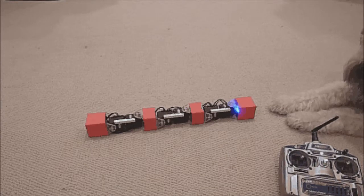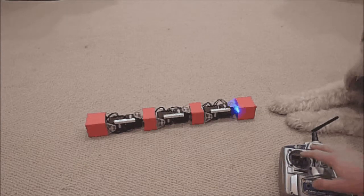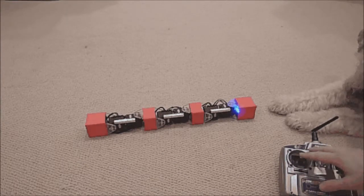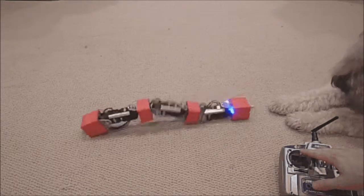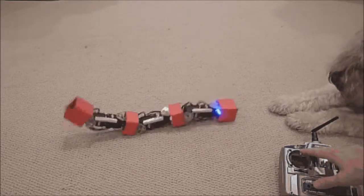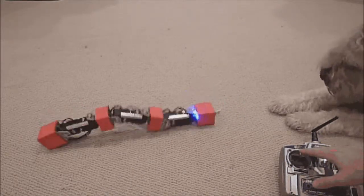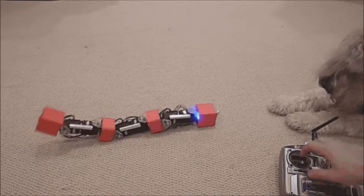This is the six motor configuration. I'm just going to demonstrate a couple of things. This is what I call the wave. It's basically a crawling motion so it can crawl forward and crawl backwards.